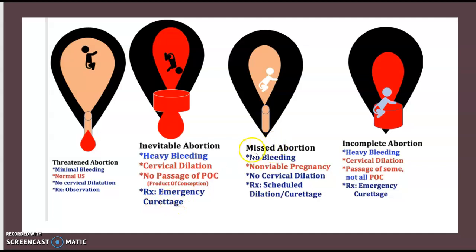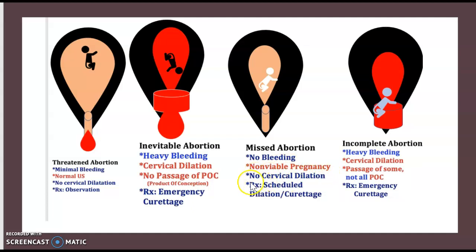The third one is missed abortion. There is no bleeding at all. There is no viable pregnancy and there is no cervical dilatation. Management — take your time — scheduled dilatation or curettage.